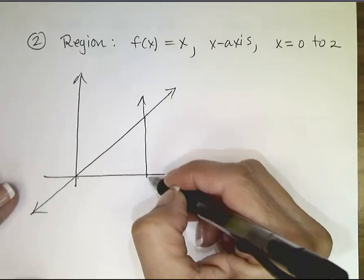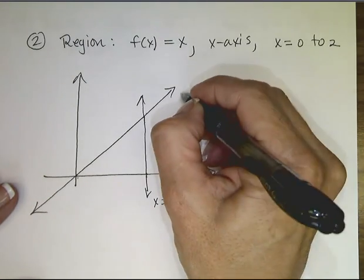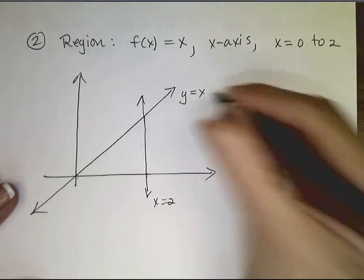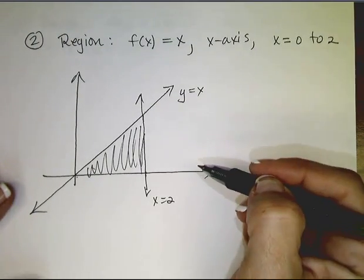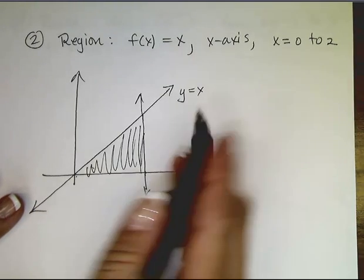Okay, that's the line x equals 2. This is the function y equals x. And the region that we care about is that one. Okay, this is just a triangle.